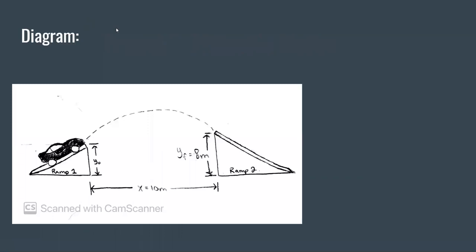So for our project, as you can see in the diagram right here, we have a car launching off of ramp one onto ramp two. We have the distance across them to be 10 meters. We have the height of ramp two is eight meters. And the height of ramp one,